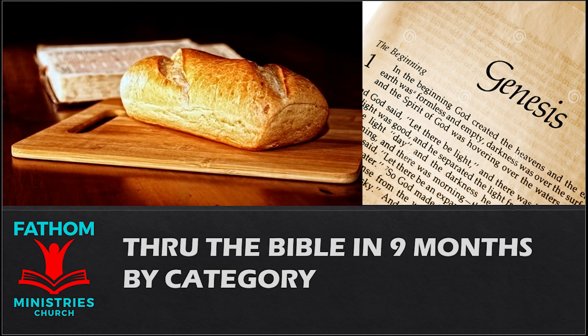And the Lord said to me, Proclaim all these words in the cities of Judah and in the streets of Jerusalem. Hear the words of this covenant, and do them. For I solemnly warned your fathers when I brought them up out of the land of Egypt, warning them persistently, even to this day, saying, Obey my voice. Yet they did not obey or incline their ear, but everyone walked in the stubbornness of his evil heart. Therefore I brought upon them all the words of this covenant which I commanded them to do, but they did not. Again the Lord said to me, A conspiracy exists among the men of Judah and the inhabitants of Jerusalem. They have turned back to the iniquities of their forefathers who refused to hear my words. They have gone after other gods to serve them. The house of Israel and the house of Judah have broken my covenant that I made with their fathers.